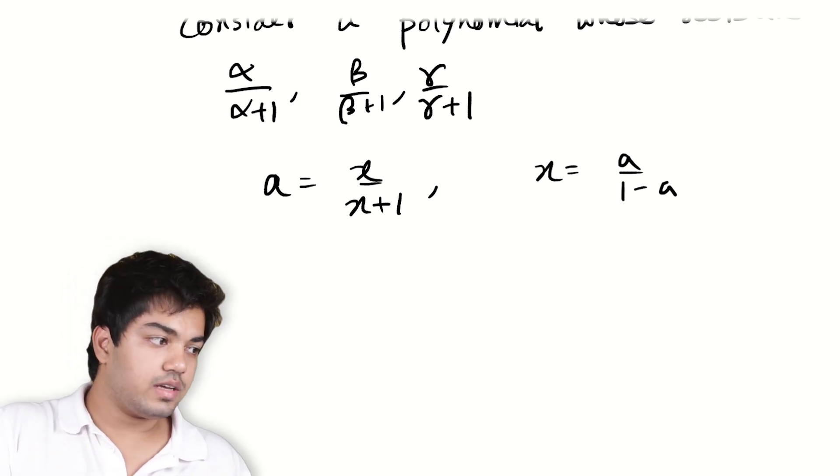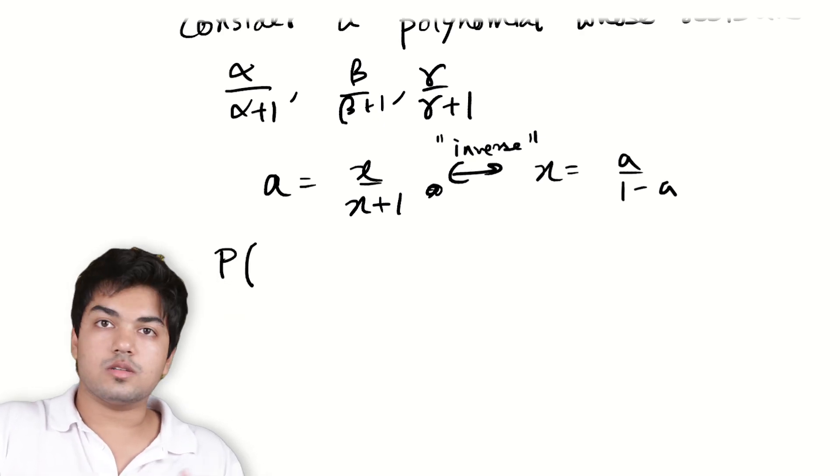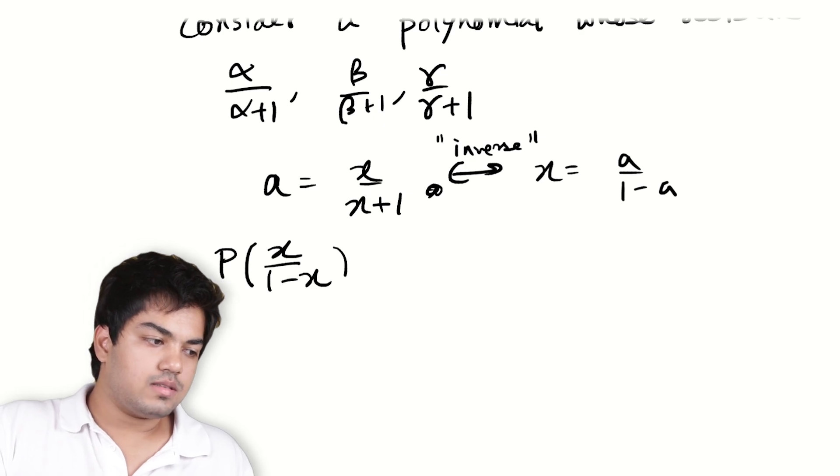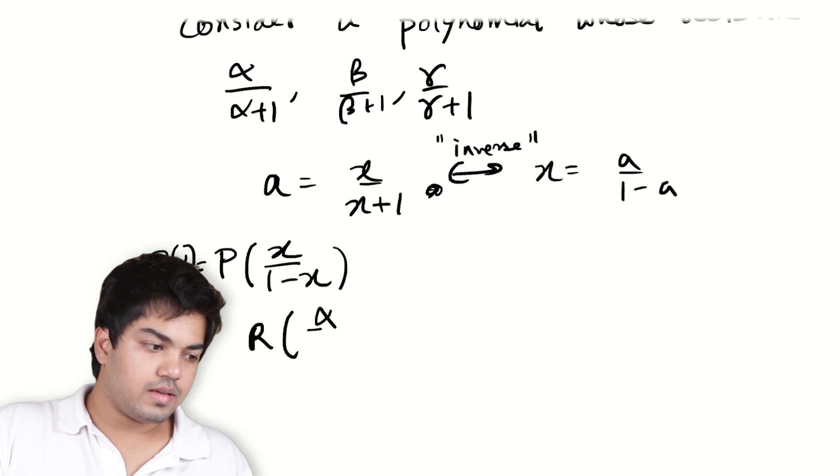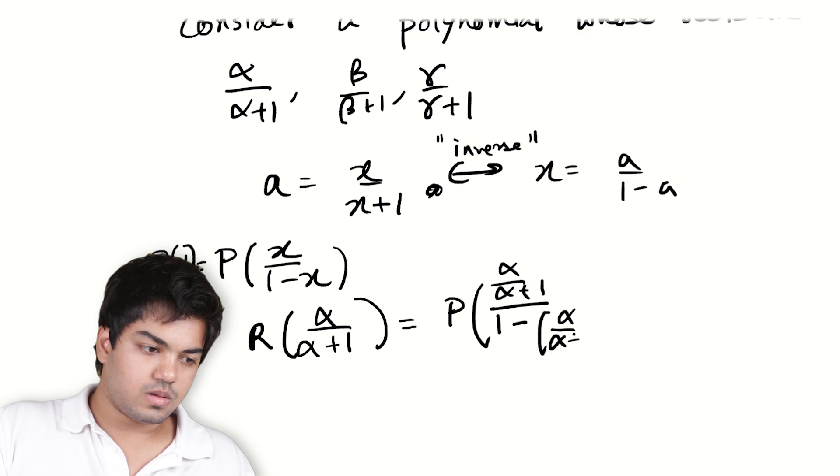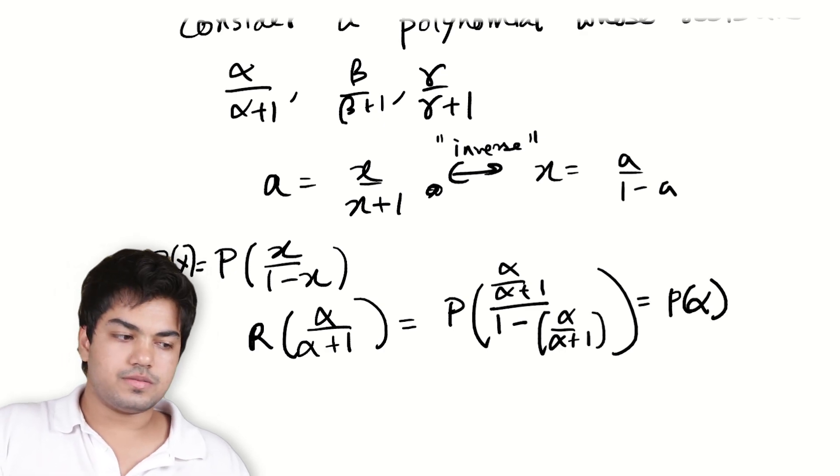What I'm trying to say is, if I could somehow consider the polynomial, these are inverse, the inverse operations in some sense. So in particular, if I consider the polynomial, it's not really a polynomial but we make it one. P(x/(1-x)), if I call this thing R(x), then R(α/(α+1)) is equal to P of, and let's plug it in. Let's see what happens. α/(α+1) divided by 1 - α/(α+1). Right, what is this? You just do the calculation. This is exactly P(α), but since α is a zero, this is equal to 0.